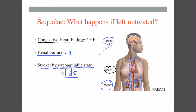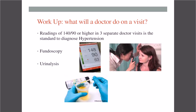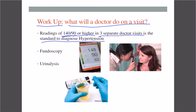For workup — if you go see a doctor — to diagnose hypertension you need to have at least three readings of 140 over 90 or higher at three separate doctor visits; that is the standard to diagnose hypertension. Sometimes your numbers can be higher and fewer readings are needed, but three visits at 140/90 is the current standard.